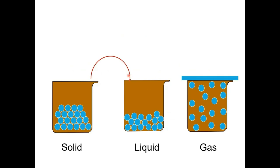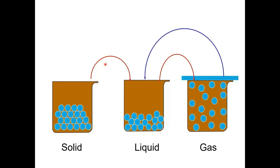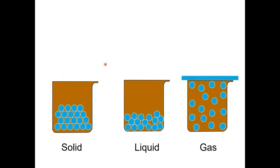Let's look at the changes of the states of matter and their processes. Solid will be melted to become liquid, and liquid can undergo boiling and vaporization to become gas. Gas will be condensed to form liquid, and liquid will be frozen to become solid. Solid can also sublime to directly become gas and vice versa.